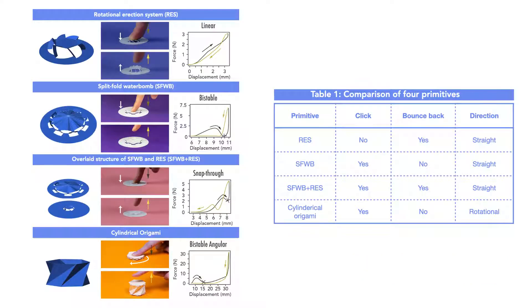Our research presents an approach to easily design and fabricate buttons with customizable haptic feedback based on common Kirigami and Origami primitives. Kirigami haptic swatches are comprised of four Kirigami and Origami primitives for haptic feedback.